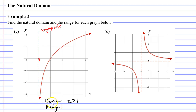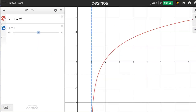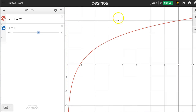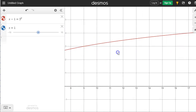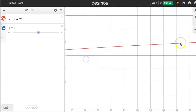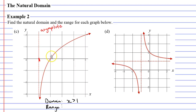Now let's look at the range. For the range we look at our vertical axis or y-axis. We can see that the graph continues down forever, so it exists for all y values in the negative direction. Checking in Desmos, the graph exists for y values of 1, 2, 3, and as we zoom out we find more and more y values in the positive direction. So it's safe to assume the graph exists for all y values in both the positive and negative directions. Therefore our range is all real y.